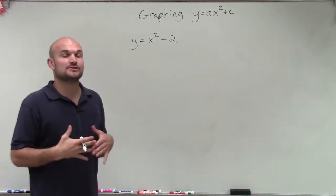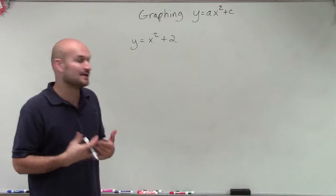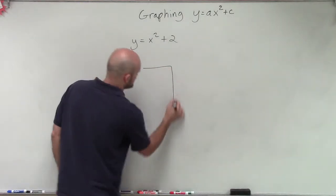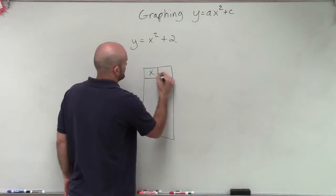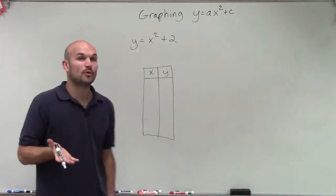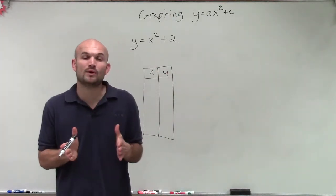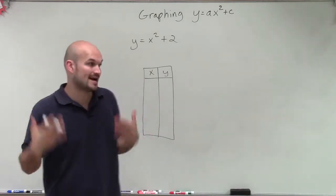To do this, what I want to do is make sure I create my table of values. So I'm going to have a table of values, and I'm going to have x and y coordinates. Now, remember, it doesn't matter what points you pick, but we have to make sure we choose points that are going to be to the left and to the right of our axis of symmetry.